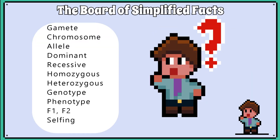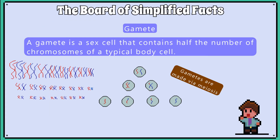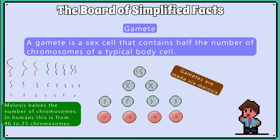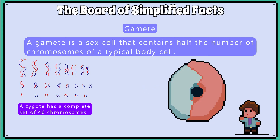We must first learn the following terms and their definitions for the exam, and for the rest of this video to make sense. A gamete is a sex cell that contains half the number of chromosomes of a typical body cell. The human male gamete is the sperm cell, and the female gamete is the egg cell. During fertilisation, these combine to form a zygote with a complete set of chromosomes.